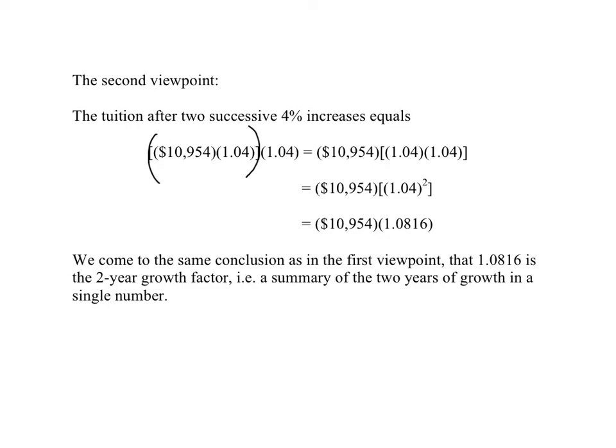Thanks to the associative property of multiplication, I'm also allowed to move these parentheses and carry out this multiplication, see what I get, and multiply that by 10,954. That is legal on all seven continents, and it makes a real difference to our understanding of the mathematics of growth. Because we can compute 1.04 times 1.04, that's 1.04 squared, that's 1.0816.